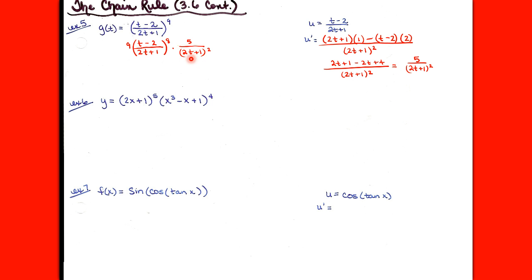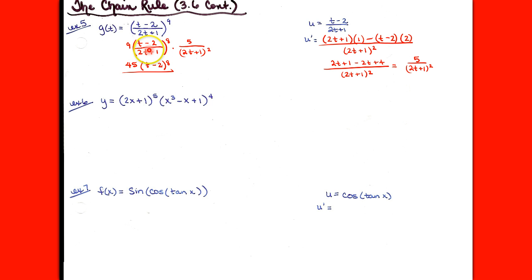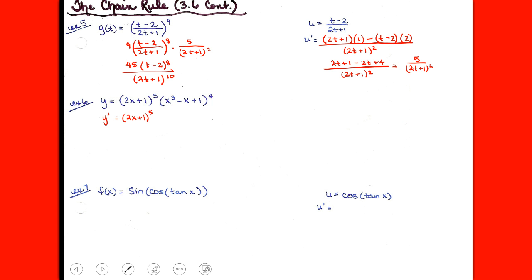Now let's bring that over here. You can see how much simpler it is than trying to carry everything together step by step — it turns into a mess. So now we have derivative of the outside times derivative of the inside. We take 9 times 5 to get 45, leaving t minus 2 to the 8th in the numerator. Separating numerator and denominator, I have 2t plus 1 to the 8th times 2t plus 1 squared, giving 2t plus 1 to the 10th in the denominator.